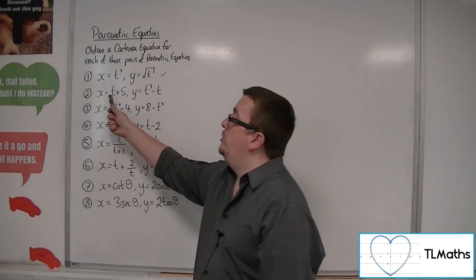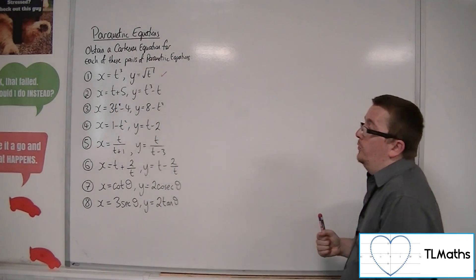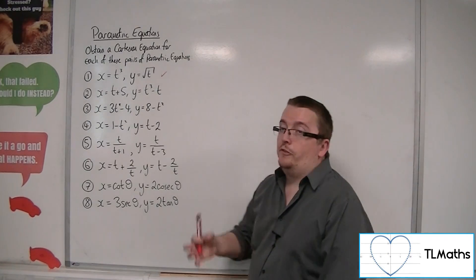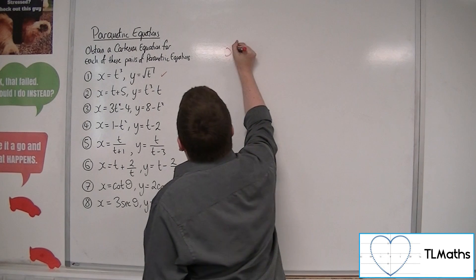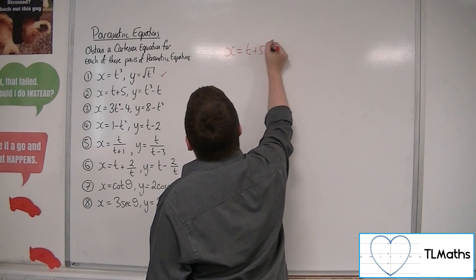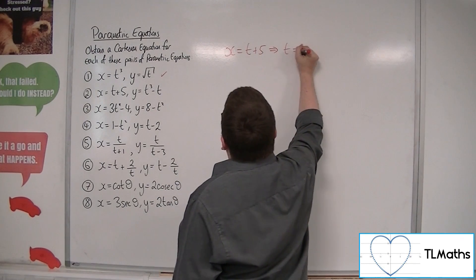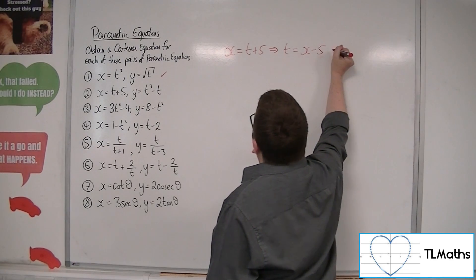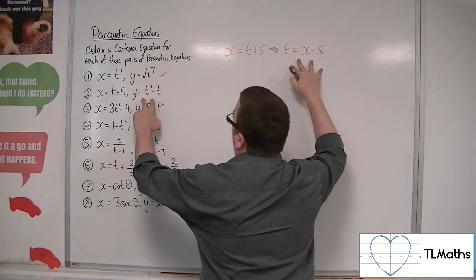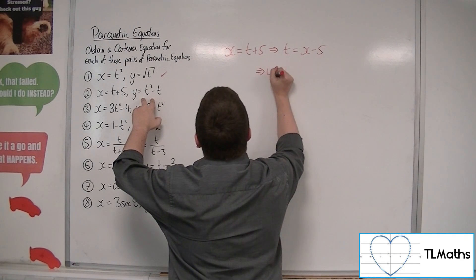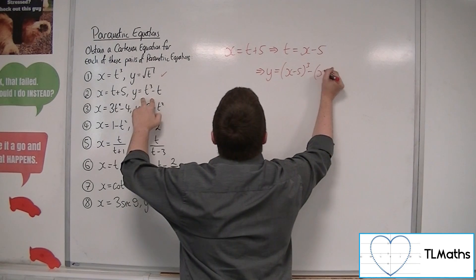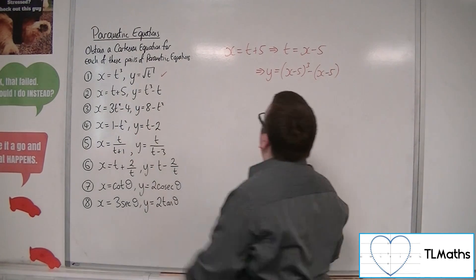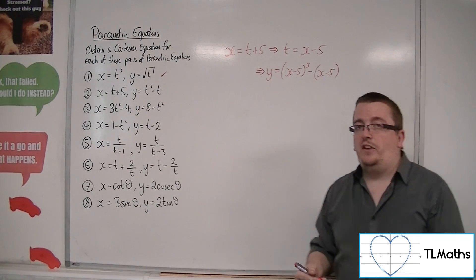So the only one I can rearrange is the first one, the x equals t plus 5. So if there was a simpler one to rearrange, go with that one. So x is equal to t plus 5, so rearranging that, you can say t is equal to x minus 5. Then you can substitute that one into the second equation. So y equals x minus 5 cubed minus x minus 5.